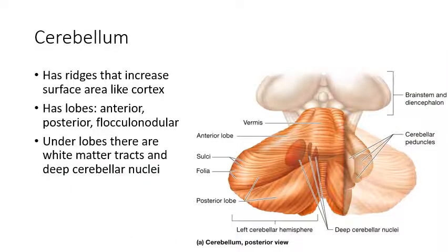The cerebellum is in the back and at the base of the brain. It has its own cortex — the cerebellar cortex — also lined with ridges to increase surface area for more function in a smaller volume. It has several lobes, and beneath those lobes, the cerebellar nuclei, which are clusters of cell bodies involved with processing for the cerebellum.